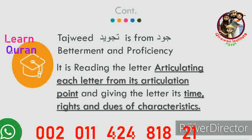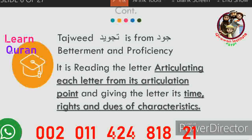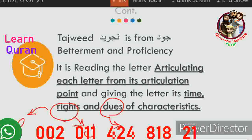The applied definition of tajweed is: reading each letter and articulating each letter from its articulation point, giving the letter its time, and giving the letter its dues and rights of characteristics. The rights of the letters are qualities that are fixed to the letter — for example, sad is a heavy letter and lam is a light letter. These are properties that stick to the letter and cannot leave it.